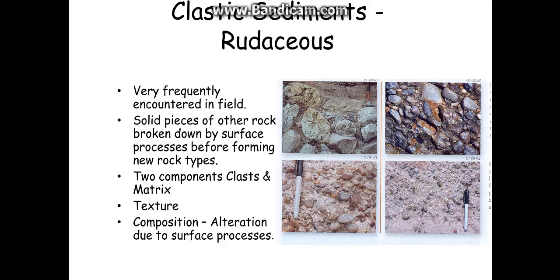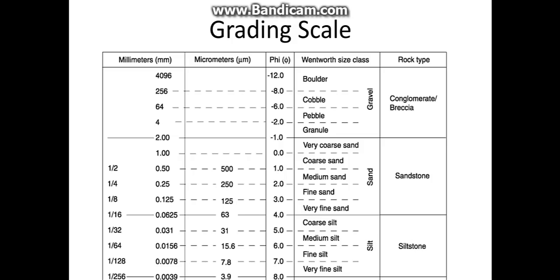Some particles are rounded, some are angular, all within a matrix. This is a grading scale showing the bottom-size graph — we have boulders, knowing their size range in millimeters, then cobbles, pebbles, and granules. These are the gravel group — cobbles and pebbles — and their rock type is conglomerate or breccia.